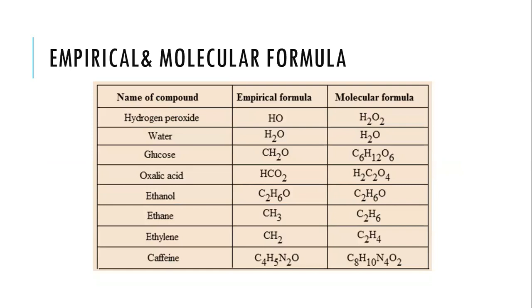For hydrogen peroxide, if you simplify 2 and 2, you get 1 and 1 — empirical and molecular formula are not the same. For water, molecular formula is H2O — if you simplify 2 and 1, it's still 2 and 1 — so molecular and empirical formula are the same. What about glucose? The molecular formula is C6H12O6.